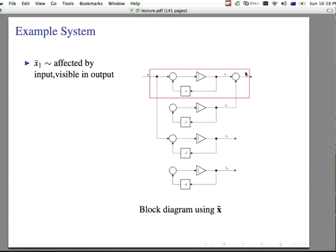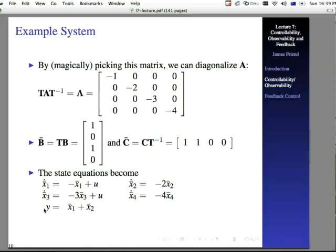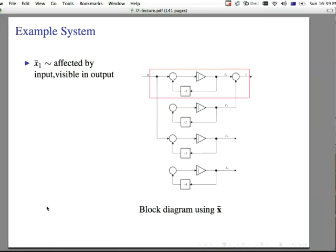And then, it's visible in the output, meaning that y, if you do something to this value of x1, you'll see it in y. And, sure enough, y is some function of x1. If x1 bar, I should say, if x1 bar changes, then y is going to change, most likely.